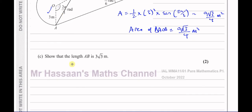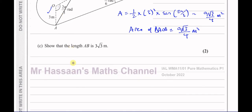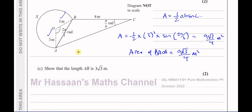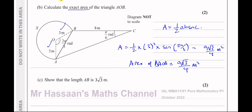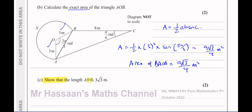Part C says: show that the length AB is 3√3 metres. When a question says 'show that' and gives you the answer, your working steps must be very complete — as complete as possible. Many students lose marks here because they don't show sufficient steps. The marks are in the working, not in the final answer, which is already given.